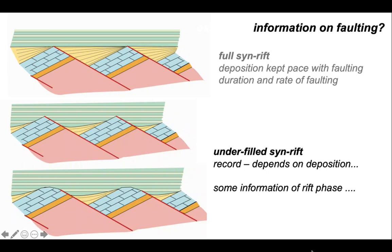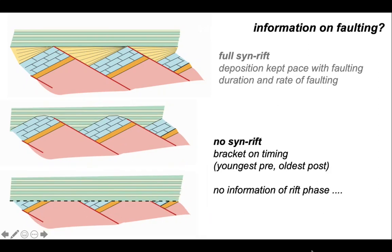In underfilled basins the record we can use to deduce faulting depends on the amount of deposition that's going on, but we have some information on the rift phase. If there's no syn-rift then the best we can do is to bracket the age of the faulting from the youngest rocks preserved in the pre-rift phase and the oldest rocks of the post-rift phase, but we have no information of the actual rift phase itself.